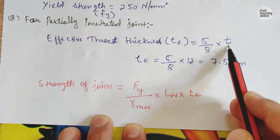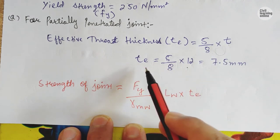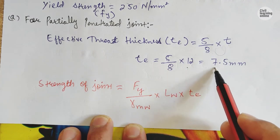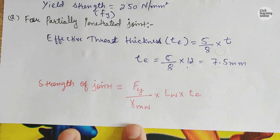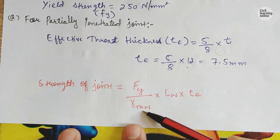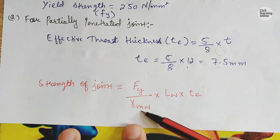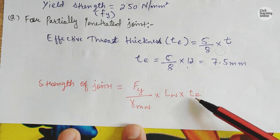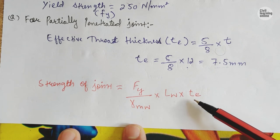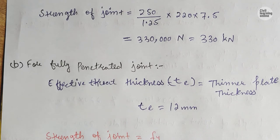For partial penetration, the effective throat thickness Te is 5/8 multiplied by the thickness of the thinner plate. The thinner plate is 12 mm, so Te = 5/8 × 12 = 7.5 mm. Now we go to the strength of the joint. The formula is: Strength = Fy divided by gamma Mw, multiplied by Lw into Te. Fy is yield strength and gamma Mw is the partial safety factor.